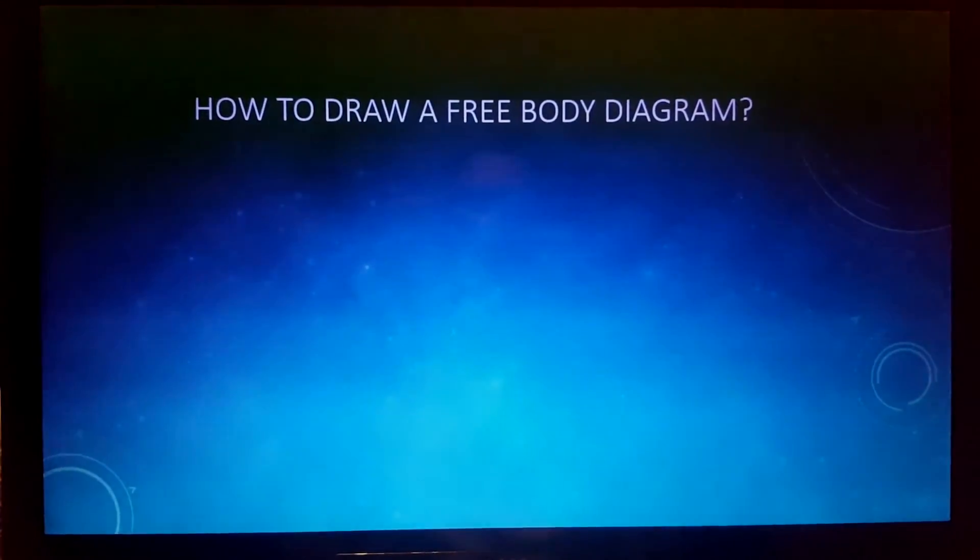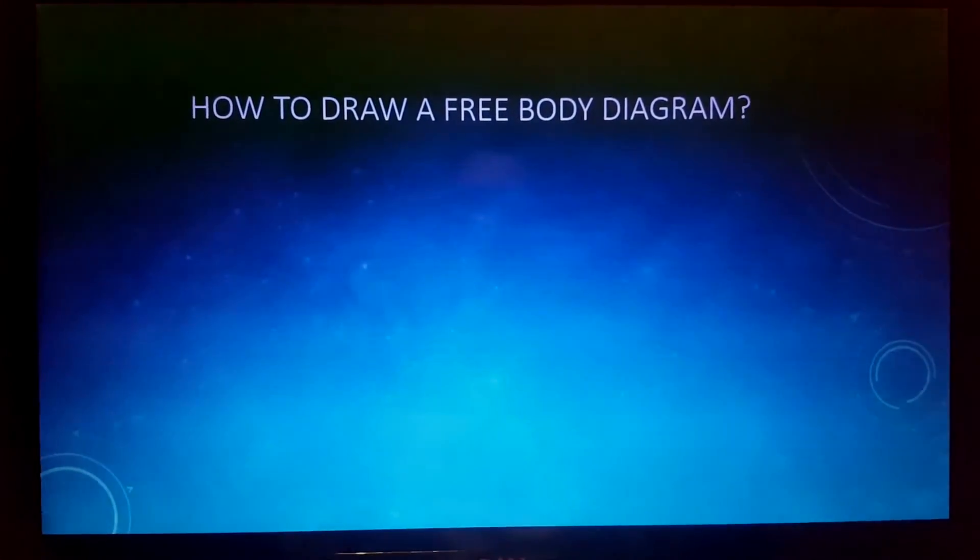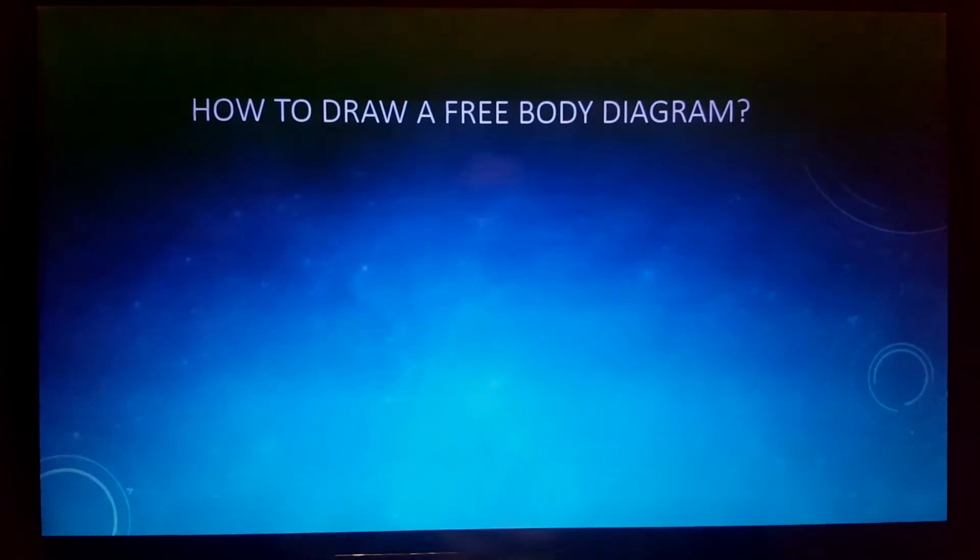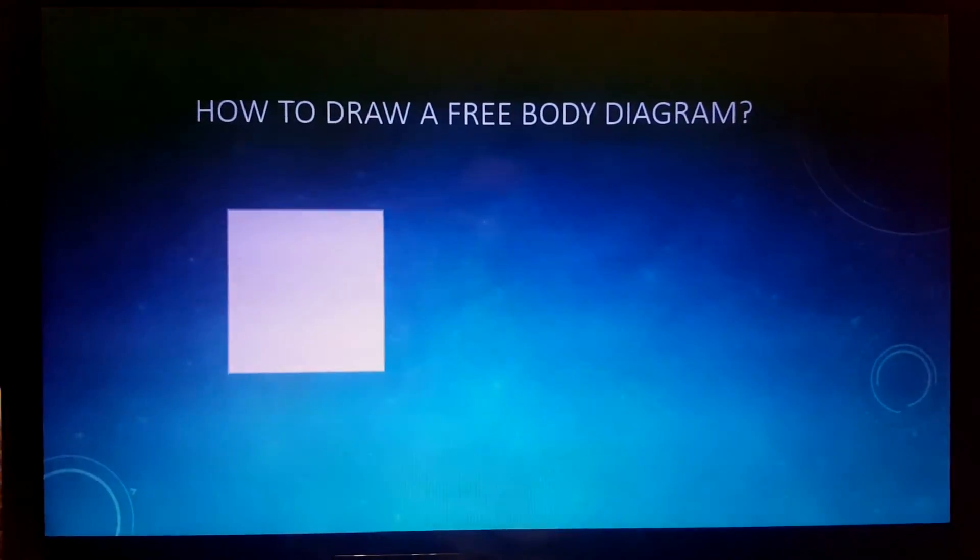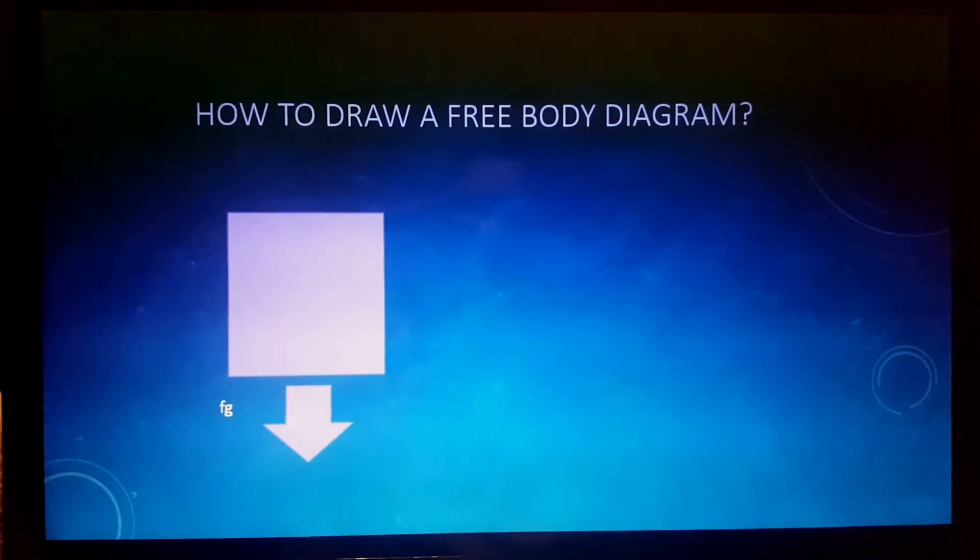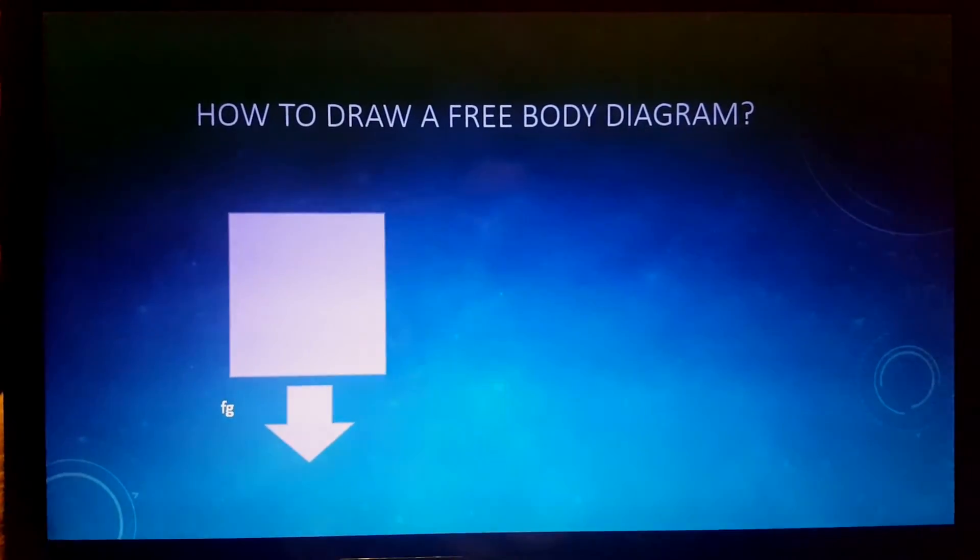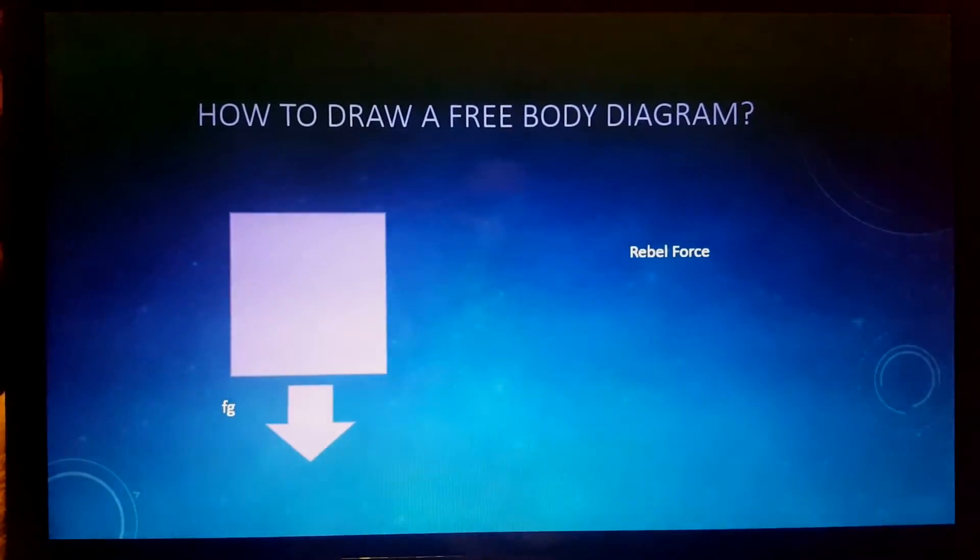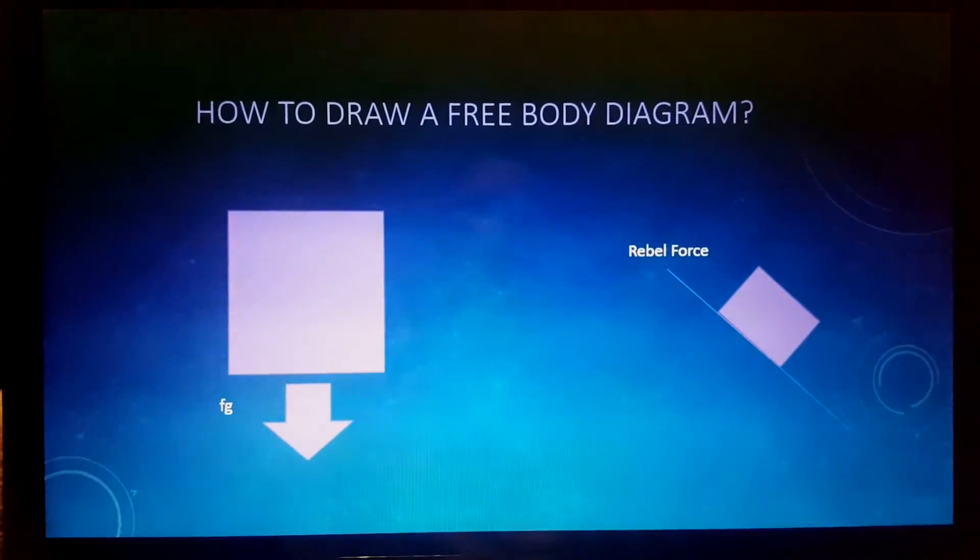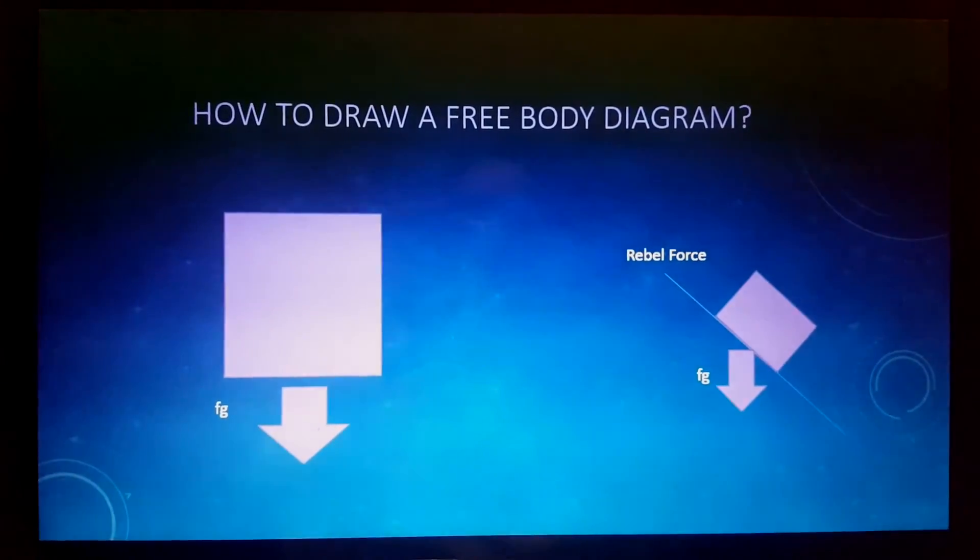How to draw a free body diagram. A free body diagram shows whatever object in question as a box. On the box, there are arrows showing which way a certain force is acting upon it. In this case, gravity. If the object in question is on an incline, the force of gravity is still straight down. This is called a rebel force.